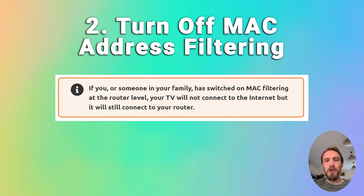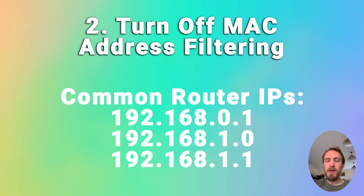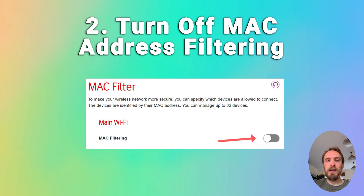On your phone or laptop, go to the admin IP address for your router — usually found on a label on the router itself, typically something like 192.168.1.1. Log in using the credentials on the router's sticker, then go to Advanced or Expert Settings, find MAC Filtering, and make sure it is switched off.